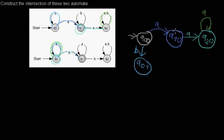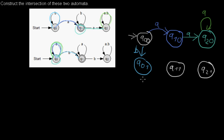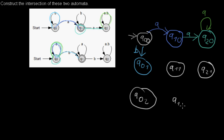As you can see, when we have an A transition, in the first automaton we move to the next state and the first index rises. So I'll just keep the pattern: increasing the first index gives Q11 and Q21. When we do a B transition, the second automaton moves to the next state, so we get Q02, Q12, and Q22.